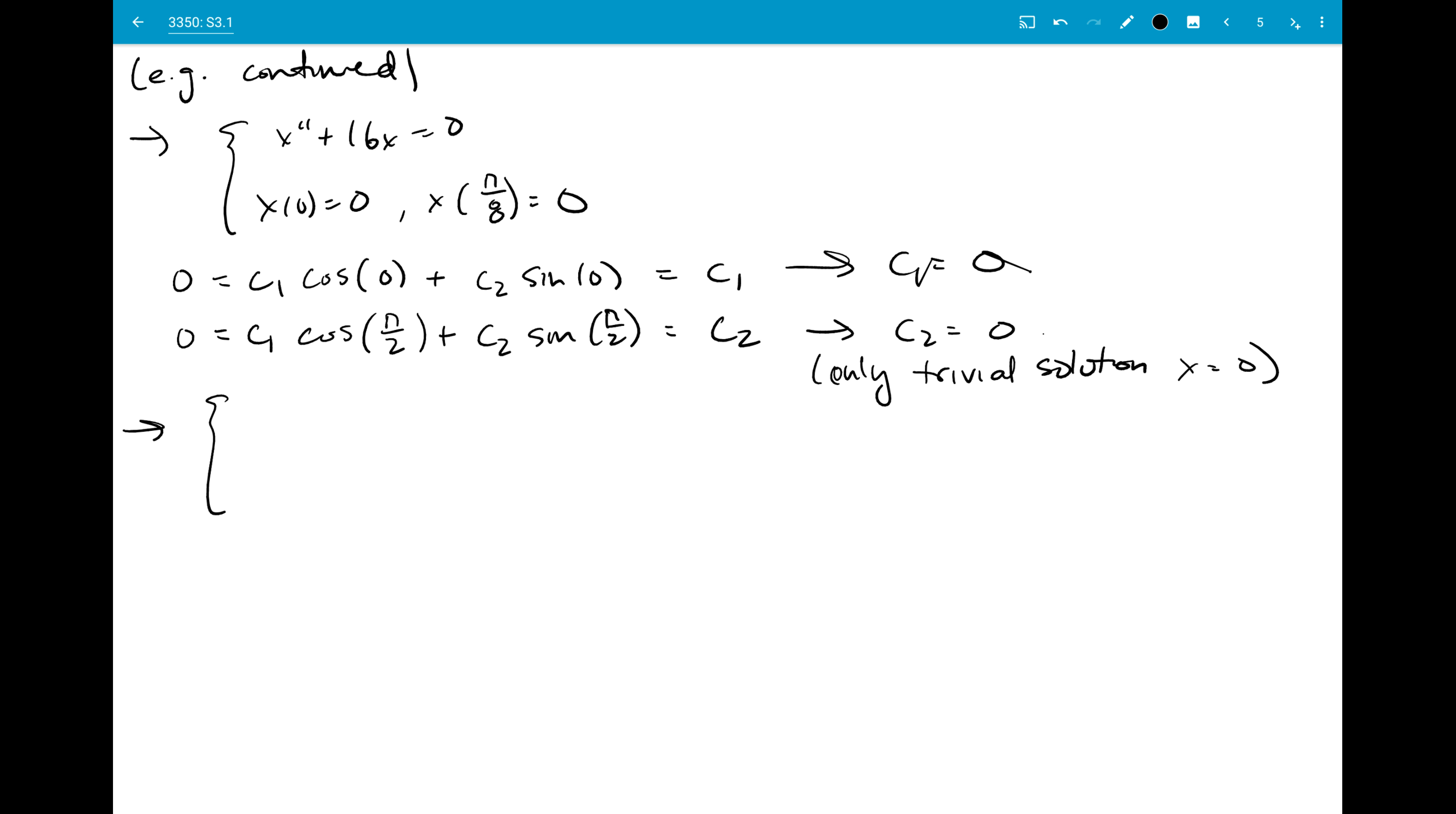And then our last example is going to show us when we have no solutions, so x double prime plus 16x equals 0. And if we take x of 0 equal to 0 as before, but now x of pi over 2 equal to 1, c1 cosine of 0 plus c2 sine of 0 is equal to c1. So that tells me that c1 has to be equal to 0. That condition hasn't changed.